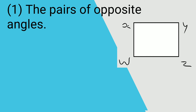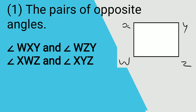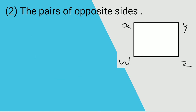The question asks for the pairs of opposite angles. Opposite angles do not share the same arm. The first pair of opposite angles is angle WXY and angle WZY. The second pair of opposite angles is angle XWZ and angle XYZ.